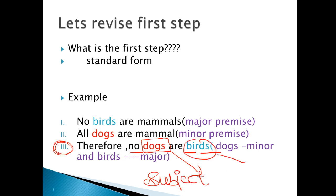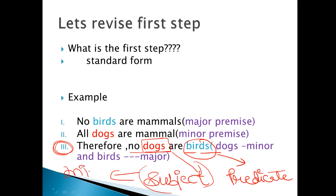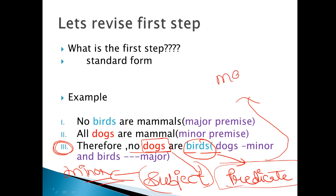The second word is our predicate. Subject होता है — हम अपने subject को minor term बोलते हैं. ये चीज़ें आपको याद करनी हैं. जो हमारा predicate होता है, उसको हम major बोलते हैं. Dog हमारा subject है — subject को हम minor बोलते हैं. Birds हमारा predicate है — predicate मतलब पीछे आने वाला, subject मतलब आगे आने वाला. Birds हमारा predicate है जो पीछे आ रहा है — that is our major term.